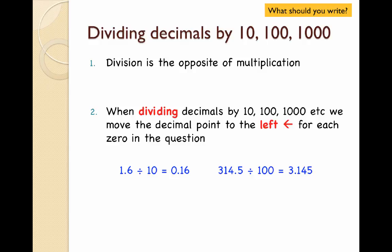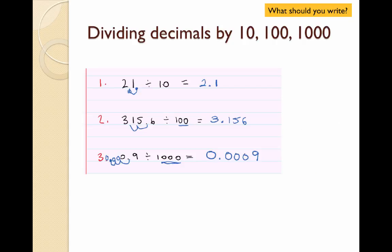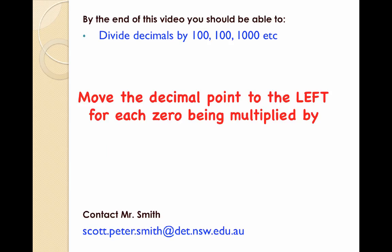So what should you write for this video? The heading 'Dividing Decimals by Tens, Hundreds, and Thousands' is a good idea, along with the two important points: division is the opposite of multiplication, and we move the decimal point to the left for each zero in the question. Having those examples is a good start. Hopefully now you know the difference between dividing and multiplying decimals. If you have any questions, please ask them in class. Good luck.